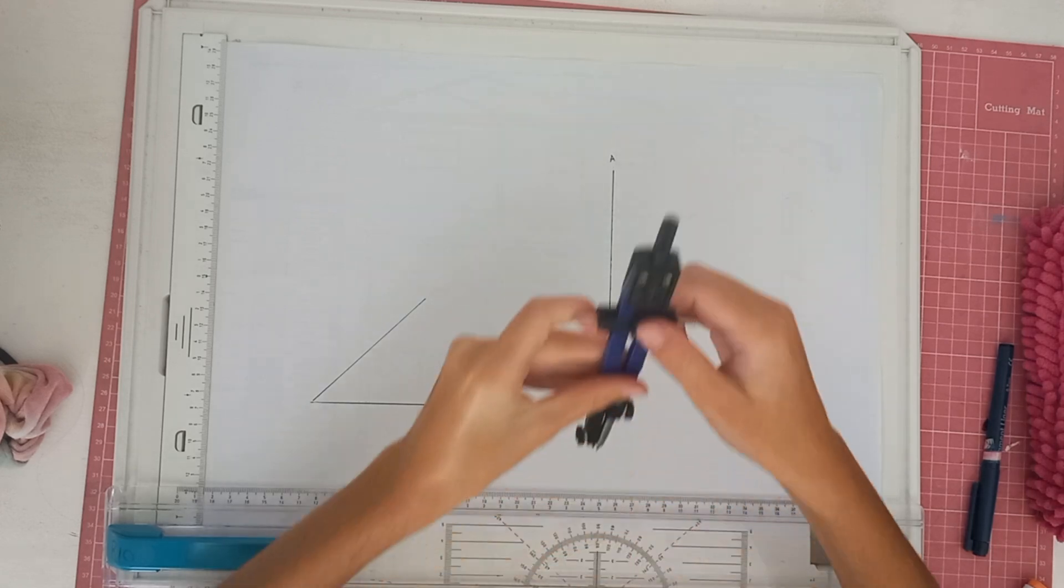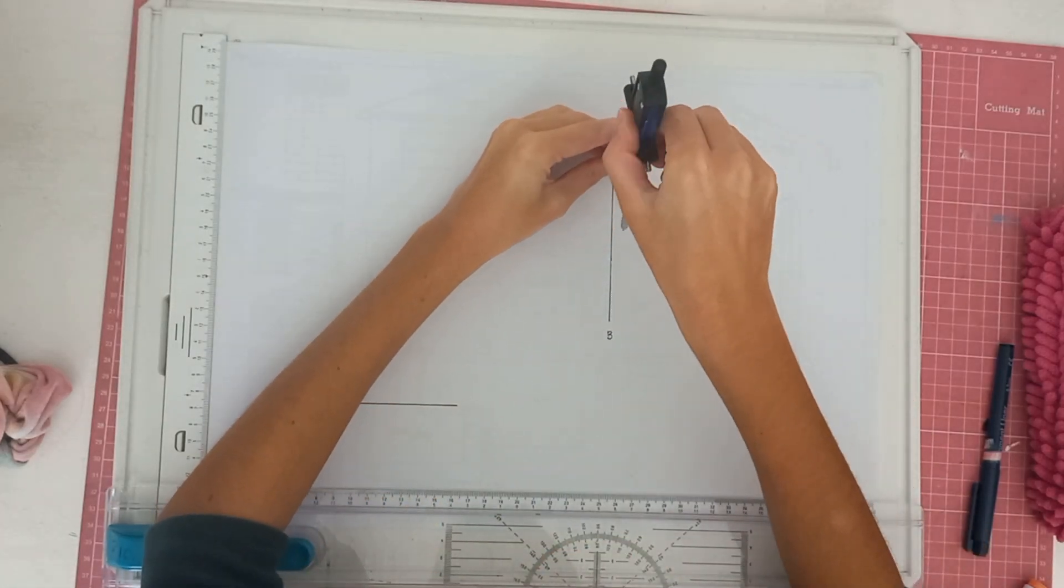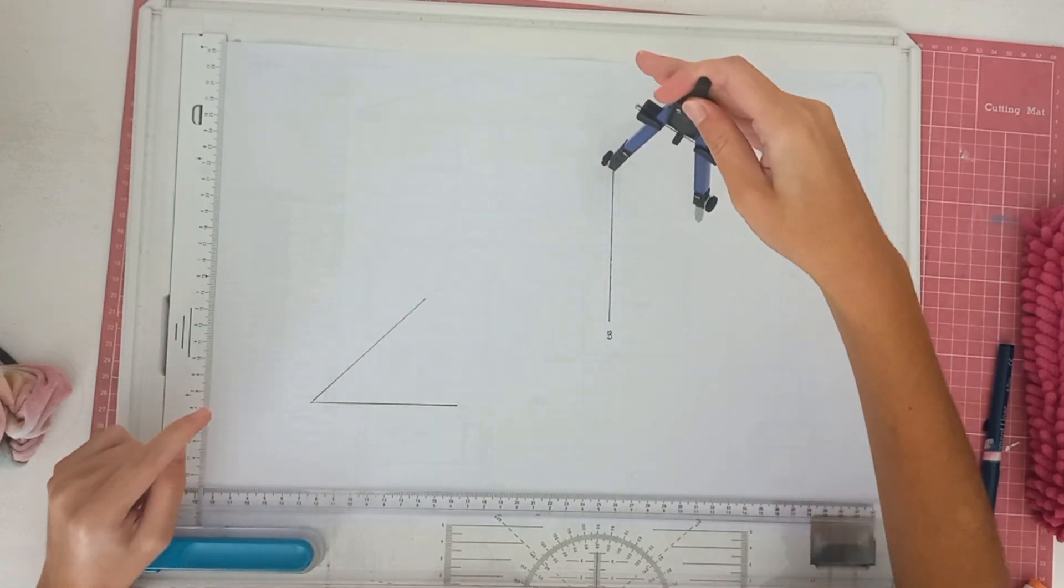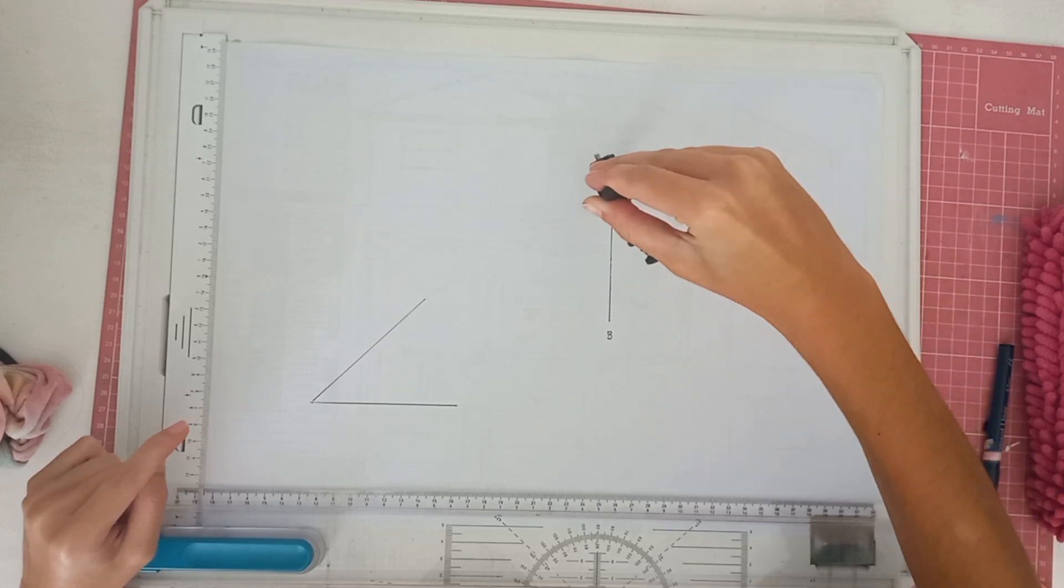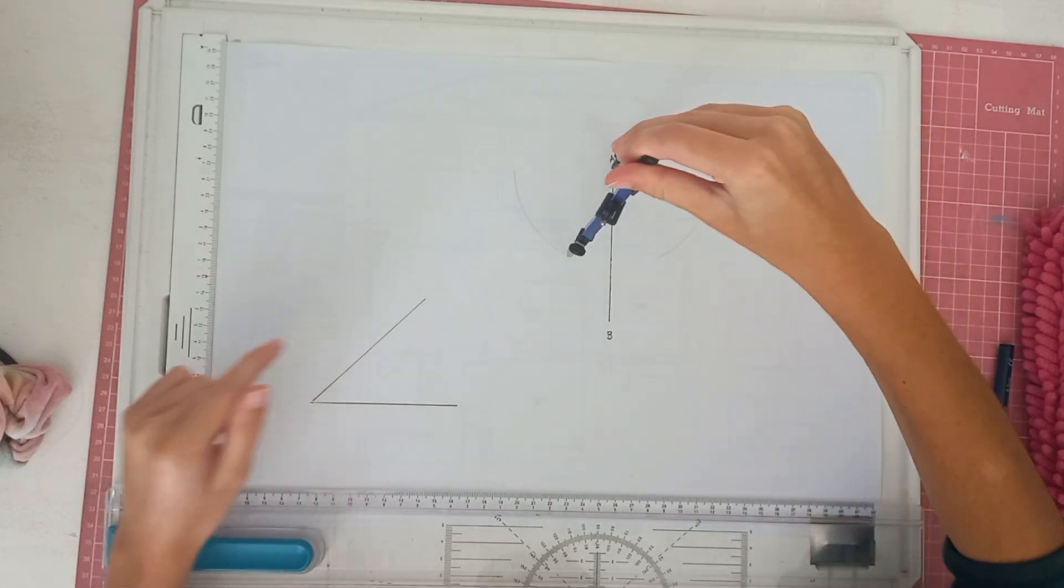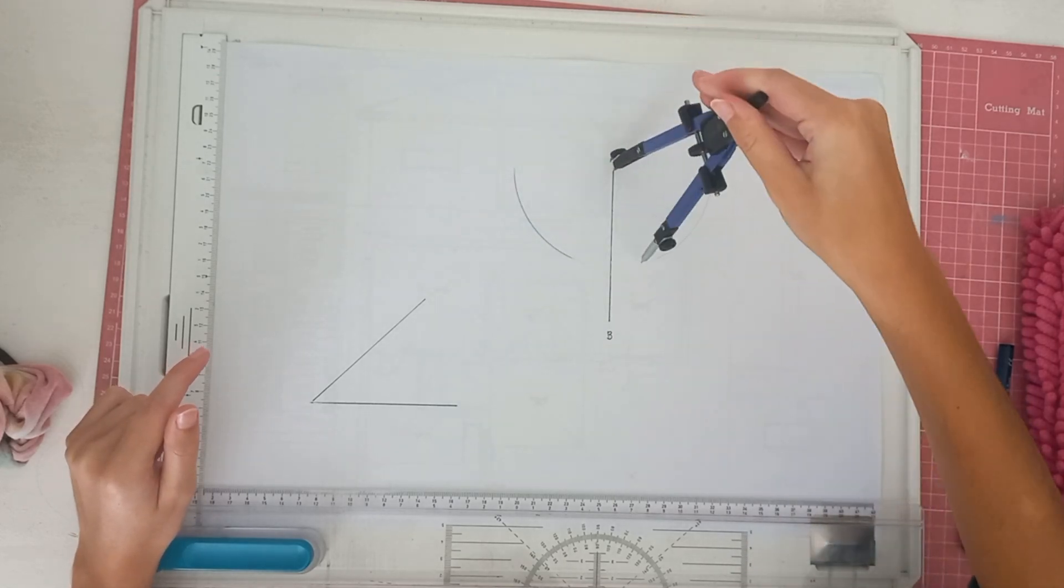When you want to bisect a line you're going to take your compass and take a measurement just slightly greater than the halfway point of the line. From A I've made these two little bows. I'm going to make them just a little bit darker just in case you can't see it.